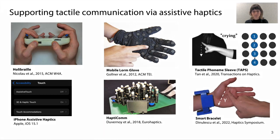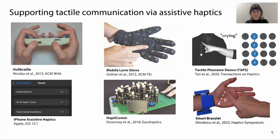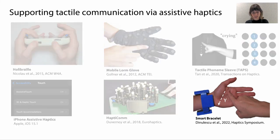Prior methods for supporting tactile communication via assistive haptics include braille interfaces, haptic wearables, tactile graphics displays, and screen-based accessibility features. Haptic output devices can translate text or speech into tactile patterns actuated onto the hand. We address the additional need of digitally encoding tactile input while leaving the hand free for natural touch interactions.